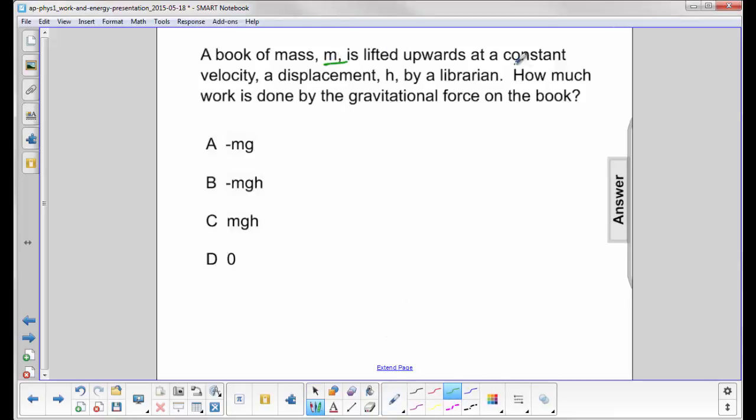A book of mass m is lifted upwards at a constant velocity. What does that mean? Well, that means that the acceleration is zero, and it displaces a distance h, or displacement h, by the librarian.